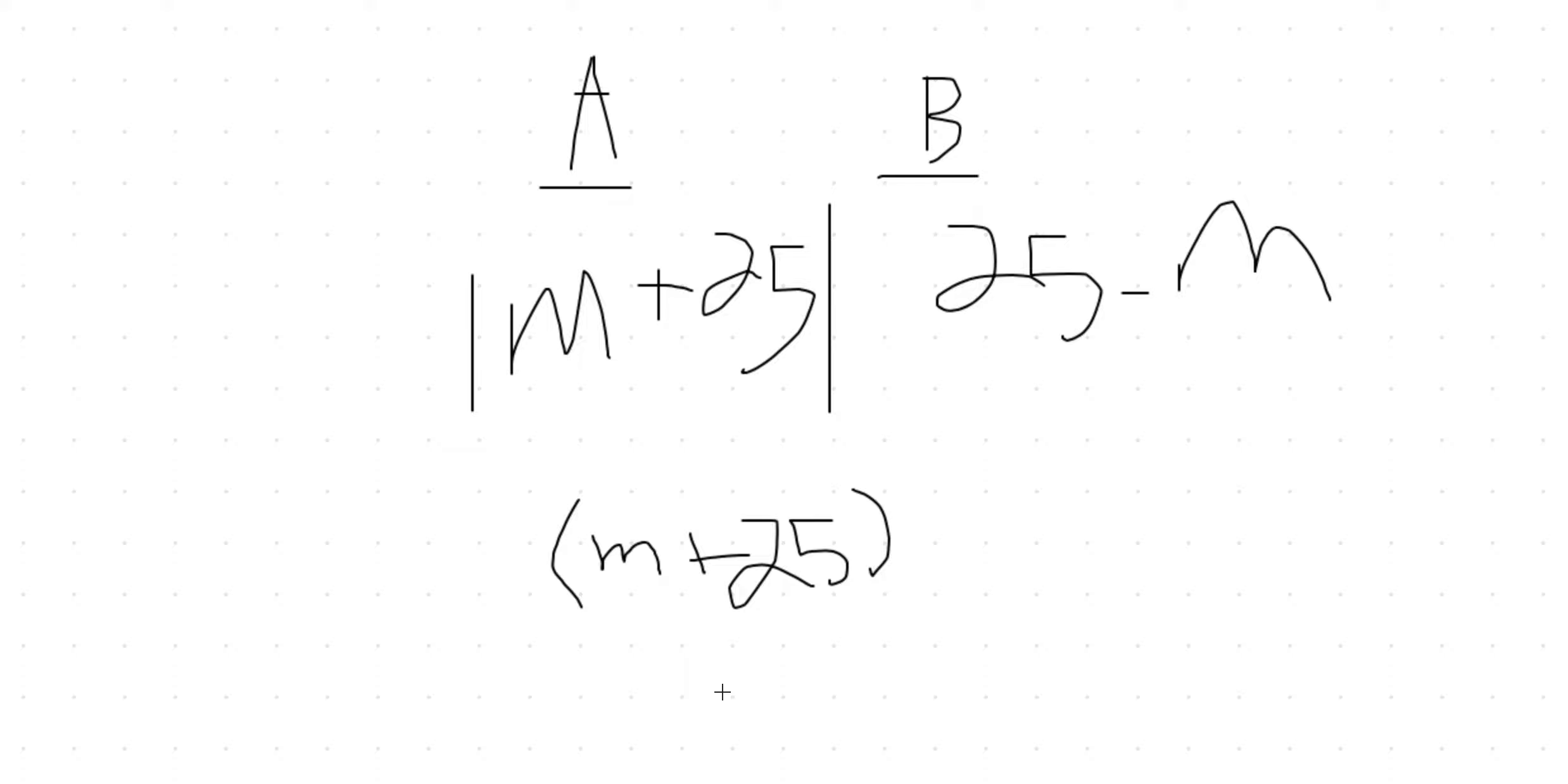So as opposed to putting plus and then a minus, let's distribute the minus. So this is going to be minus m, minus 25. So two separate equations on the left-hand side. So now there's a little box here.